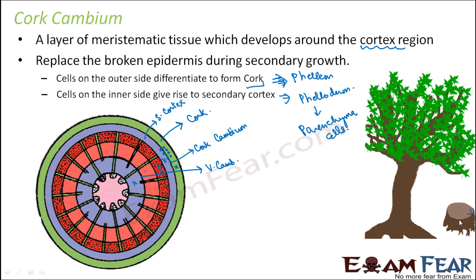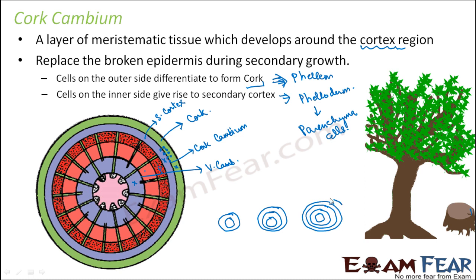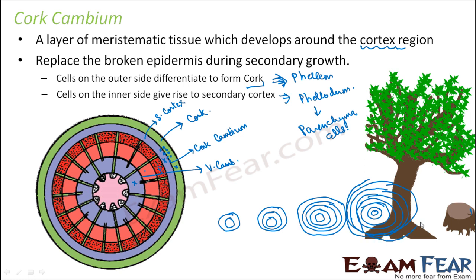When the diameter keeps on increasing, the circumference keeps increasing, meaning the thickness is increasing. We started with only primary xylem and primary phloem. Then we had primary xylem, cambium, and primary phloem. Then primary xylem, secondary xylem, cambium, secondary phloem, and primary phloem. Finally: primary xylem, secondary xylem, vascular cambium, secondary phloem, primary phloem, secondary cortex, cork cambium, and the outermost cork. The number of layers kept increasing and as a result the width of the stem keeps increasing — this is known as secondary growth.